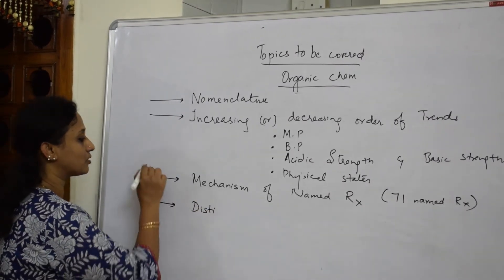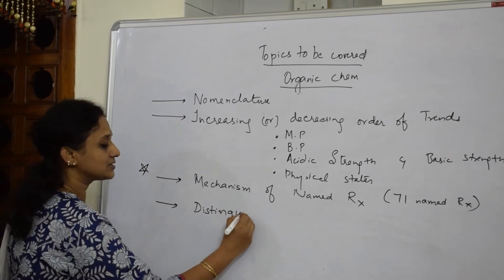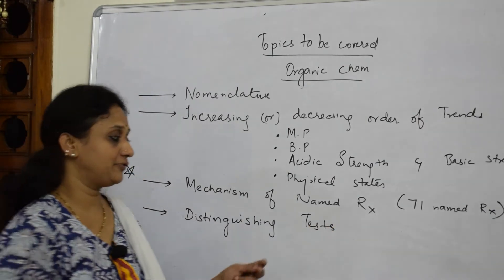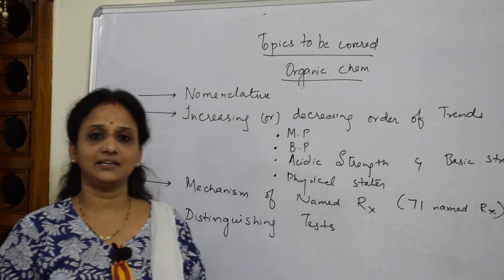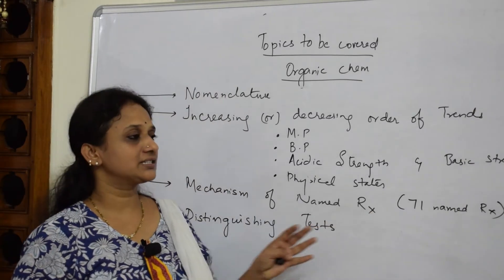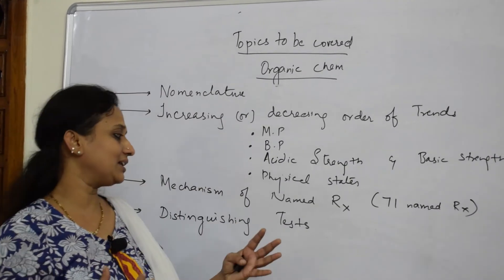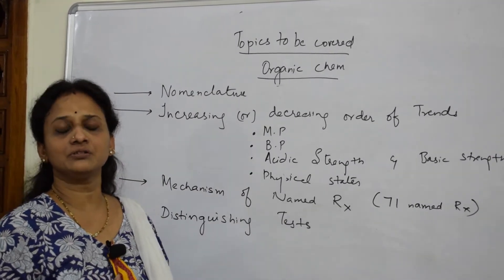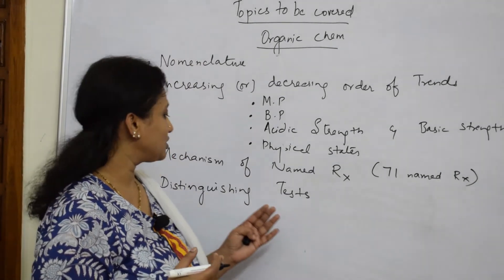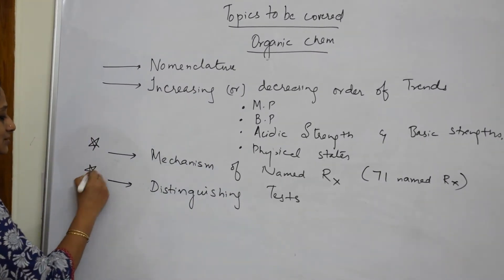After mechanisms, you will be questioned on distinguishing tests — this is very important from an examination point of view. For example, they may ask you to differentiate between alcohols and acids, distinguish between aldehydes and ketones, or distinguish between haloalkanes and haloarenes. This is a practically oriented question, so be keen while doing your practical experiments.